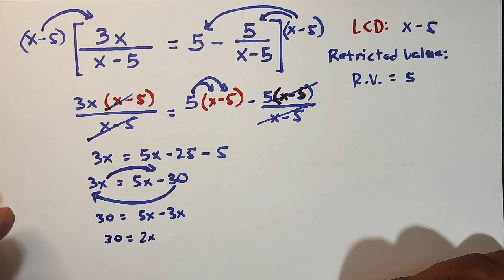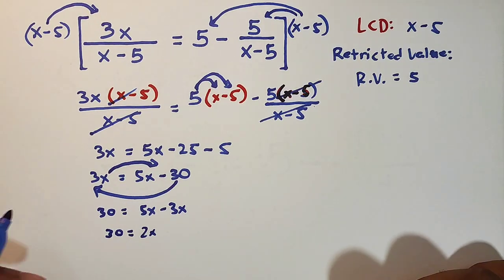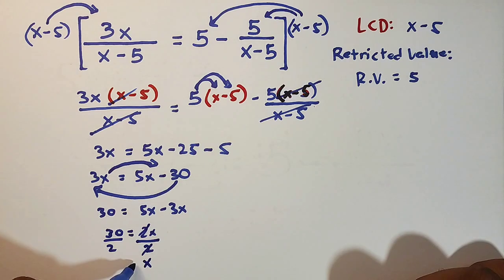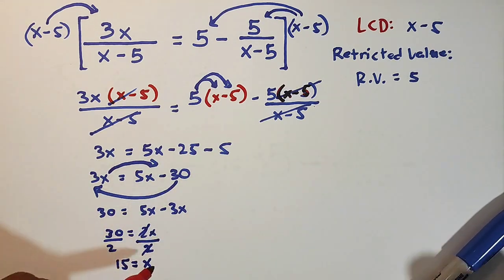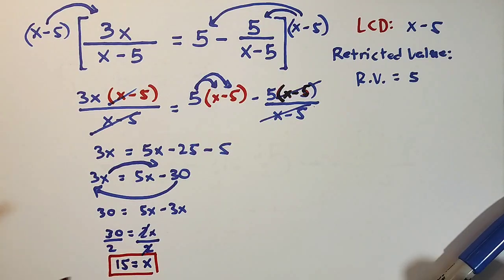And to simplify and to finally solve for the value of x, what you need to do is to divide both sides of the equation by 2. And here it is. Your x is equal to 15. And this is the value of x here. Again, this is the value of x.